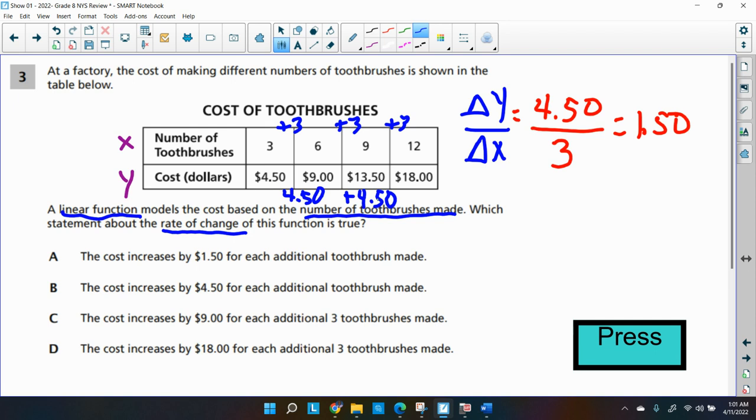The difference between the toothbrushes cost is $4.50 over 3, that difference or that quotient is $1.50 per toothbrush. Once I found the difference between the cost and the difference between the number of toothbrushes, this is my rate of change. So it's changing by $1.50 per toothbrush. So my slope or my rate of change, I call it ROC, is $1.50 per toothbrush. So the cost is increasing. The first one says the cost increased by $1.50. And if you look at the other ones, they're saying the cost increased by $4.50 or $9. So the first one has got to be it. And yes, it is.